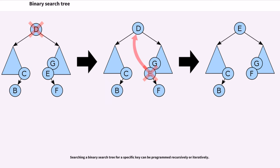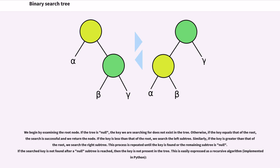Searching a binary search tree for a specific key can be programmed recursively or iteratively. We begin by examining the root node. If the tree is null, the key we are searching for does not exist in the tree. Otherwise, if the key equals that of the root, the search is successful and we return the node. If the key is less than that of the root, we search the left subtree. Similarly, if the key is greater than that of the root, we search the right subtree. This process is repeated until the key is found or the remaining subtree is null.